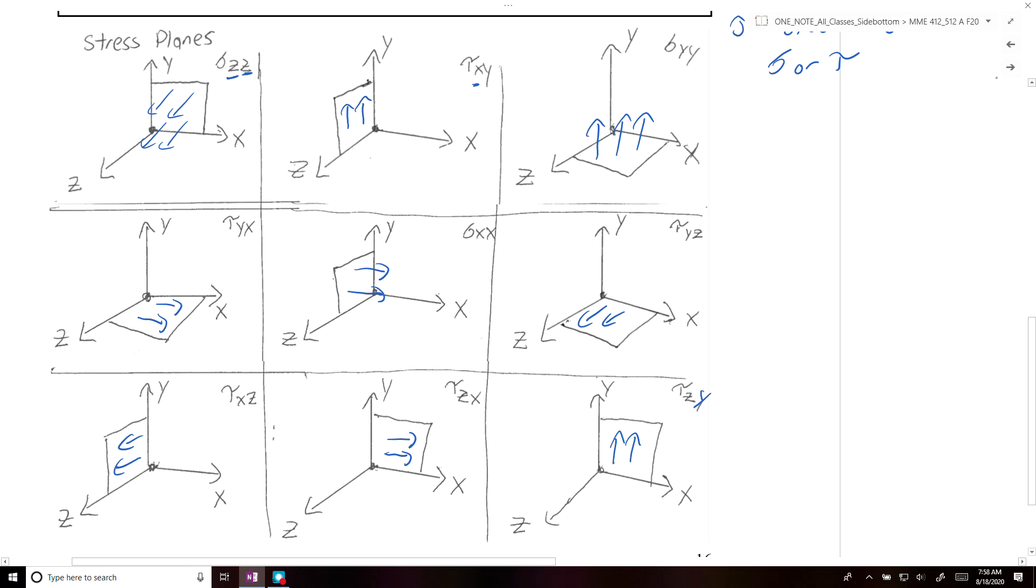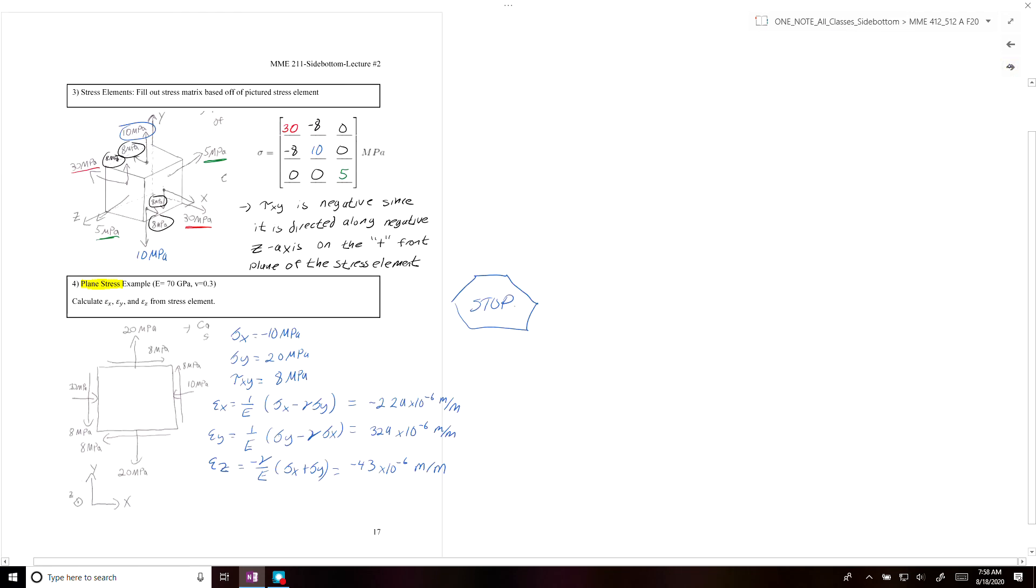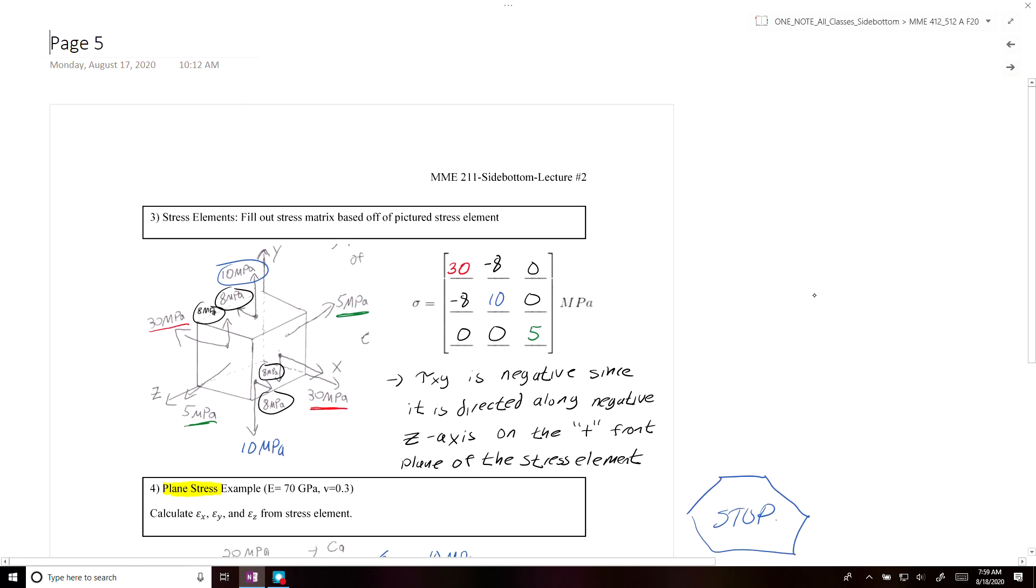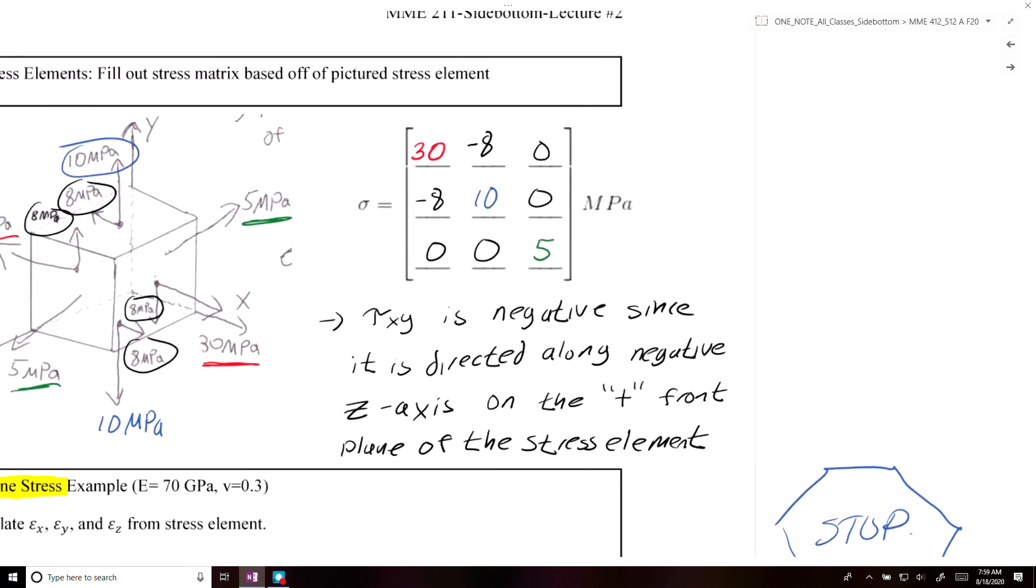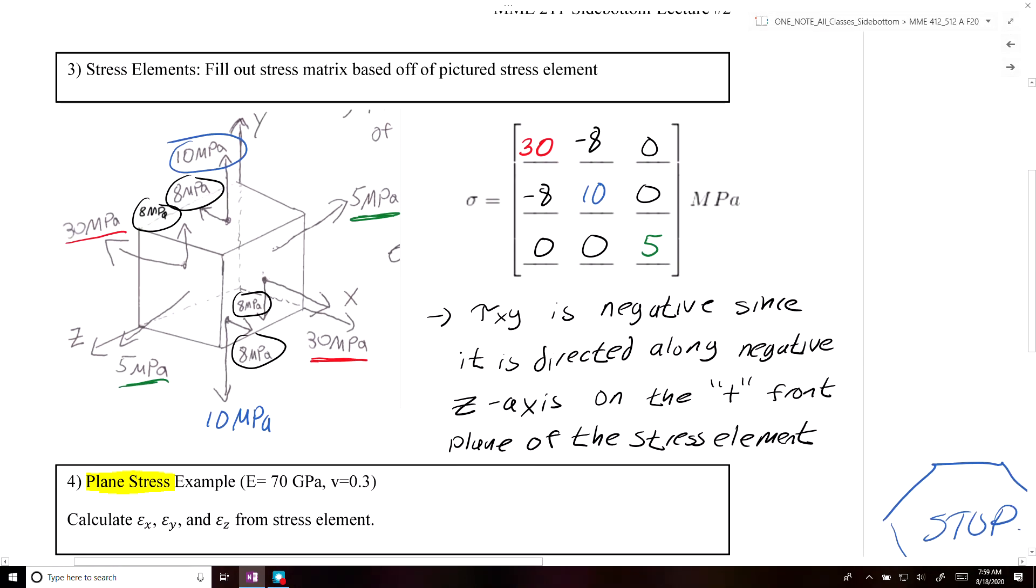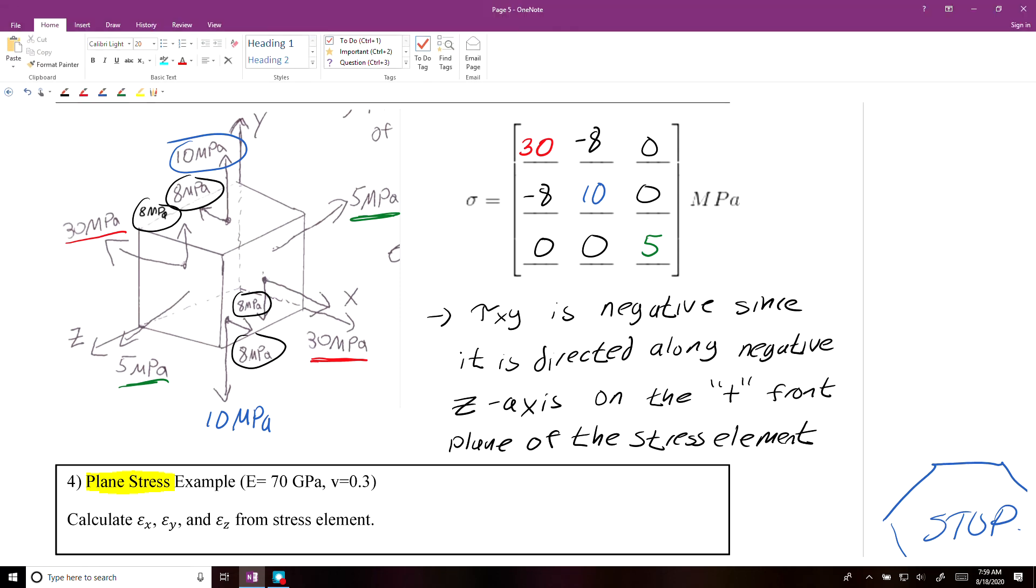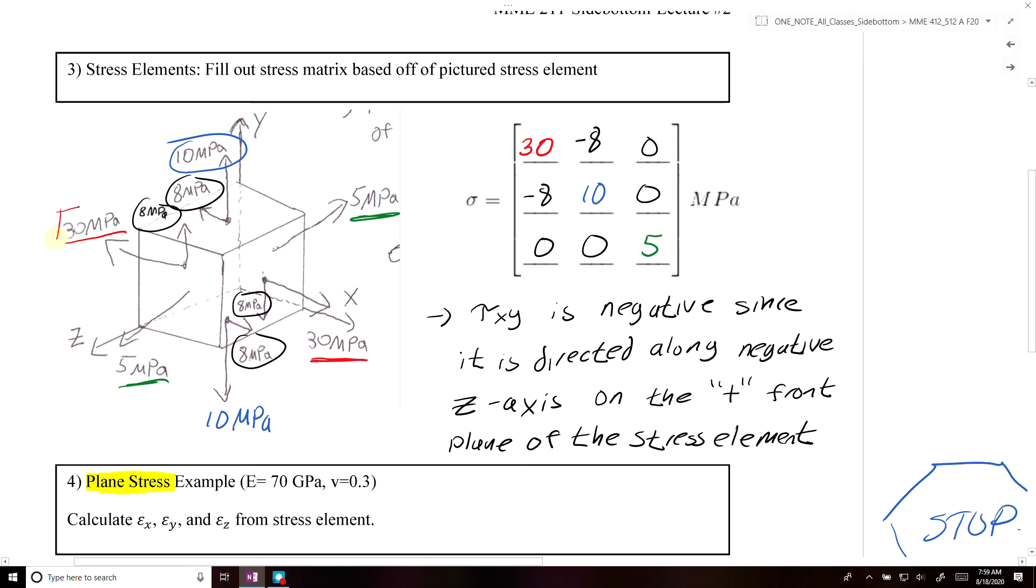So on the next page, you were asked to fill out the stress matrix based off of the pictured stress element. The easiest things to identify are the normal stresses. So you had the x-axis, which was highlighted in red here. So the stress vector is pointing along the x-axis, therefore that would be sigma xx.